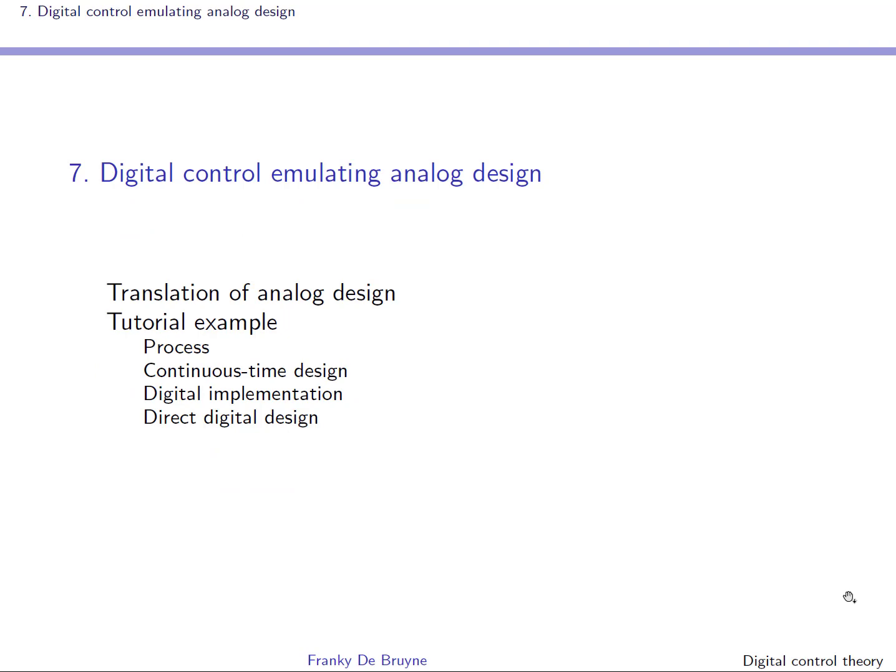Section seven compares two strategies. Strategy one is to do the design using a continuous time model or process, which will result in a continuous time controller that will then be discretized. Strategy two is to discretize the continuous time process upfront, taking into account the zero order hold, resulting in a discrete time process which is then used for control design.